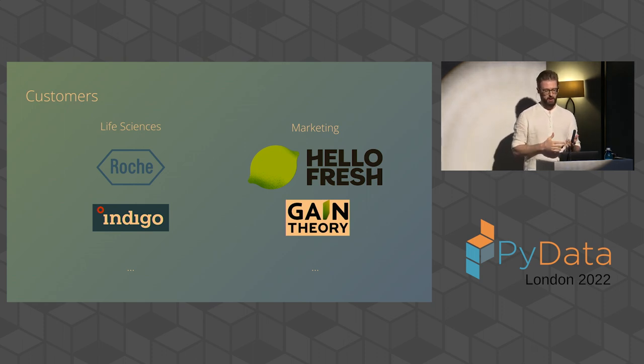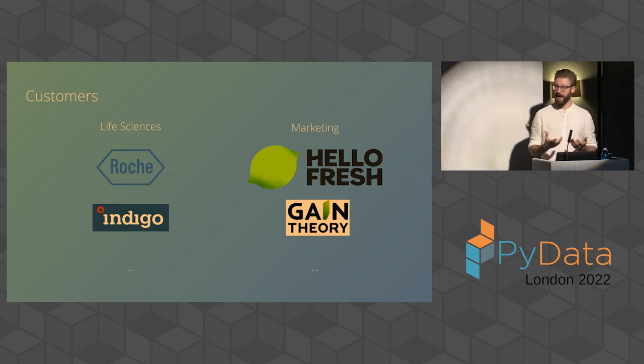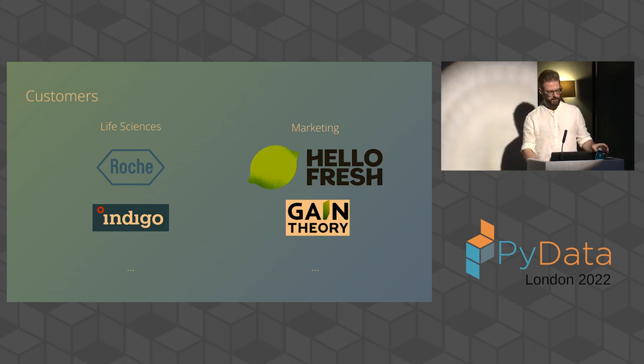When I recently thought about where have we made the biggest impact, mainly actually two domains are most active in Bayesian modelling, it seems. One is life sciences, where we consult with companies like Roche, Indigo, but also marketing. And that was more of a surprise to me, just because life sciences makes sense, it's very close to science, and Bayesian modelling has always been more established in academia.